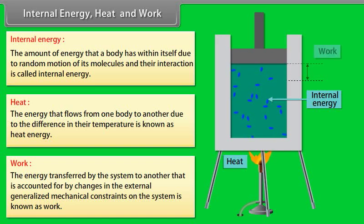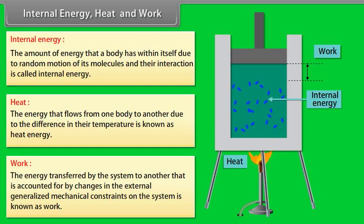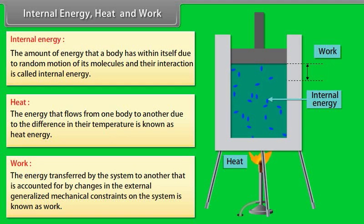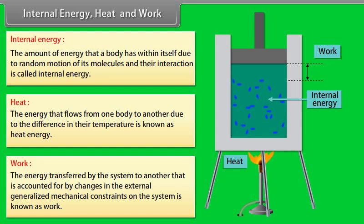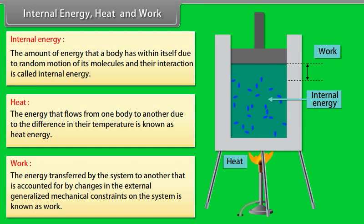Let's take an example. A gas is kept in a container with a piston mounted at the top. The container is heated from the bottom. Gas molecules are in random motion due to their internal energy. Heat energy given to the gas molecules raises the temperature and they expand. When molecules expand, a large volume is covered. This displacement is the work done.